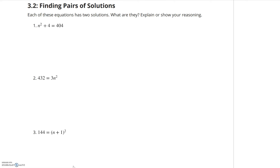We'll start with number one. We need to get something squared by itself. I see that n squared has a plus 4 over there, so I need to get rid of that 4. I'm going to subtract 4 from both sides, because that cancels the plus 4. On the left-hand side I'm left with n squared, and on the right-hand side I have 404 minus 4, which is 400.